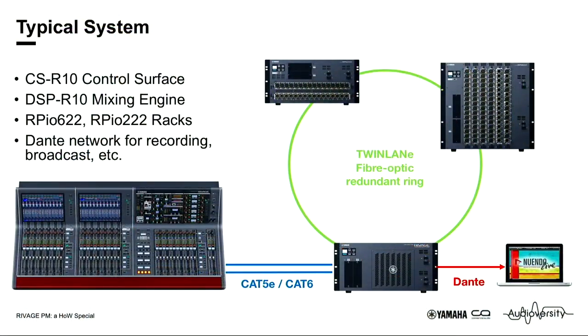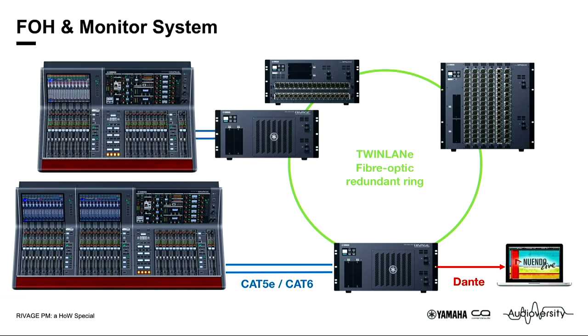Let's start off with that system overview. A typical RIVAGE system will consist of a mixing console, a DSP engine, and one or two RPIO racks where you have all your inputs and outputs. They're all connected with a fiber optic twin lane redundant ring. You may also have a Dante network where you can do your live recording and virtual soundcheck. If you want two consoles — maybe for a front of house and monitor system — just add a DSP and a console. There are two sizes of console available.